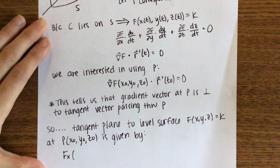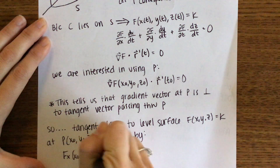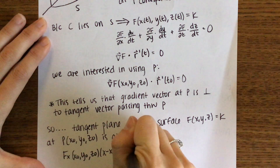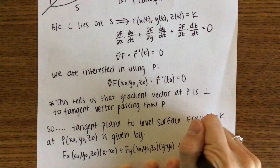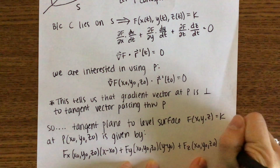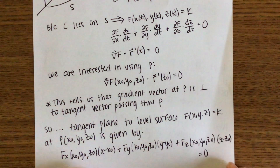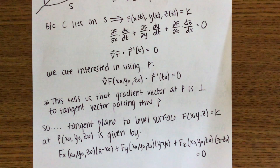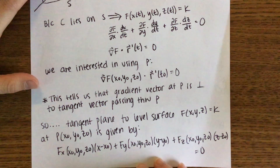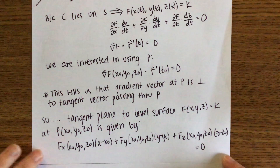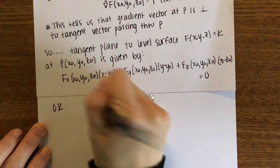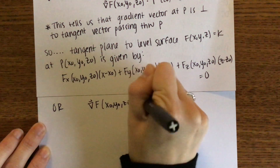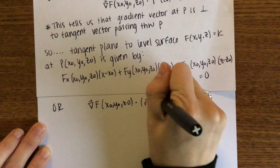The tangent plane equation is: the partial of F with respect to x at that point times (x − x-naught), plus the partial with respect to y times (y − y-naught), plus the partial with respect to z times (z − z-naught) equals zero. An easier alternative form to remember is: the gradient of F at the point, dotted with (r − r-naught), equals zero.